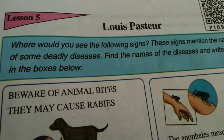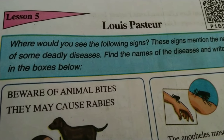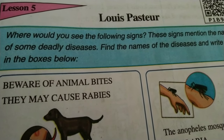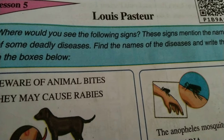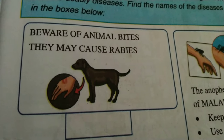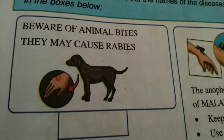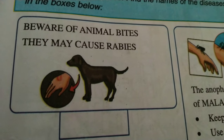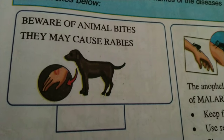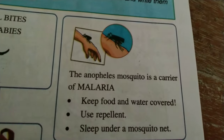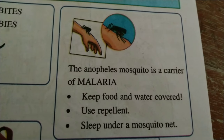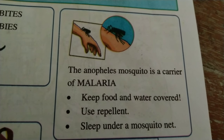Lesson number 5, Louis Pasteur. Where would you see the following signs? These signs mention the names of some deadly diseases. Find the names of the diseases and write them in the box below. The first sign: what is the name of the animal? The bite of an animal may cause rabies — it is a symbol. The next sign is the sound of an animal — mosquito is a carrier of malaria.